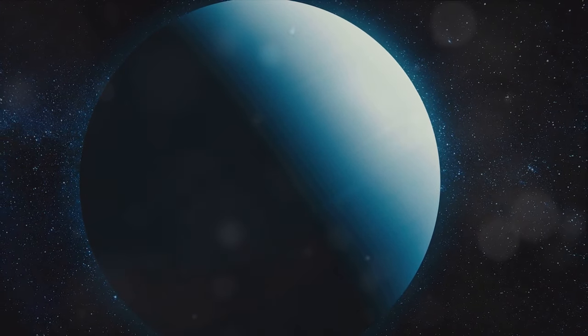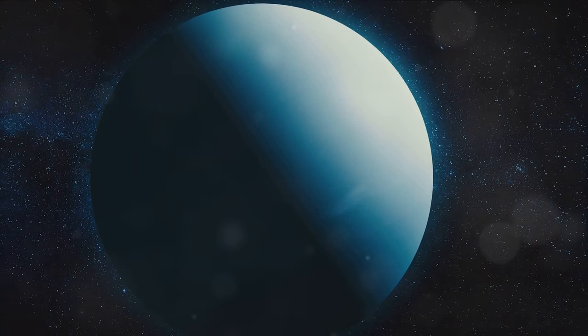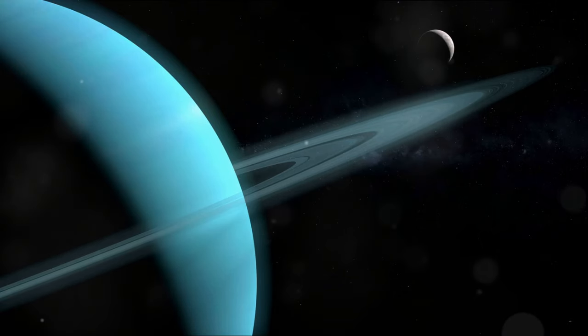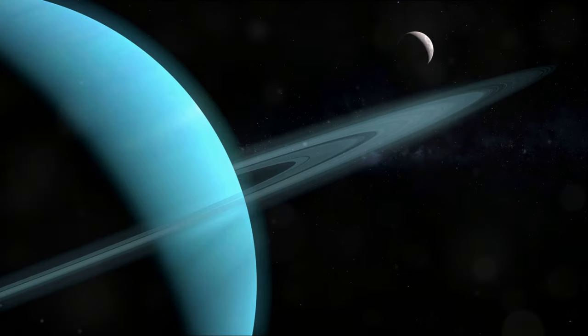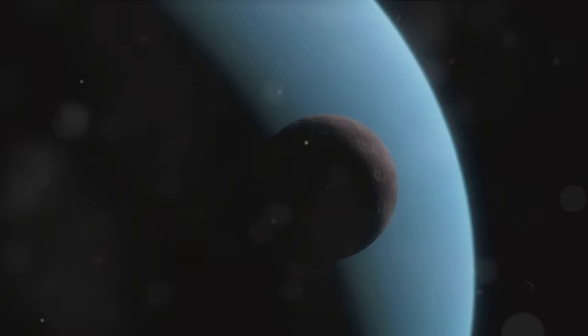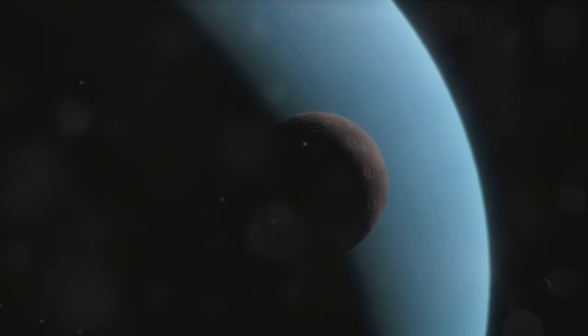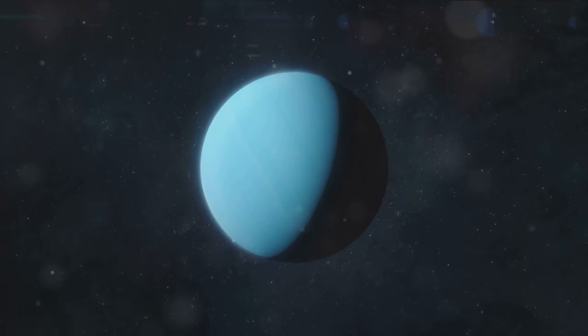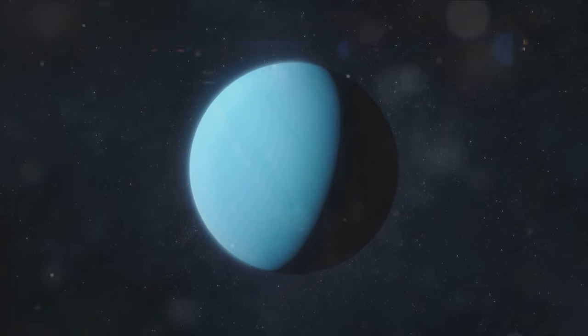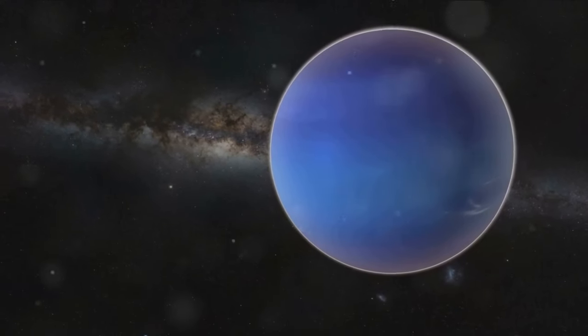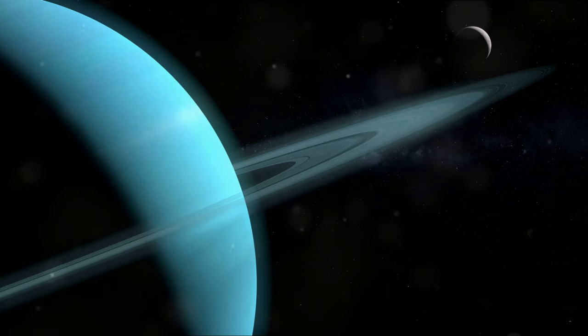As we delve deeper into the intriguing realm of Uranus's moons, the one that stands out prominently is Miranda. Named after the character in Shakespeare's play The Tempest, Miranda is the smallest and innermost of Uranus's five major moons. Despite its small size, Miranda presents a fascinating world to astronomers. It orbits Uranus at an approximate distance of 129,390 kilometers, taking a little over a day to complete one orbit. What makes Miranda unique among the moons of Uranus, and indeed in the entire solar system, is its incredibly diverse and chaotic terrain. The moon seems to be a hodgepodge of disparate geological features starkly contrasting each other in a manner that is simply mind-boggling.